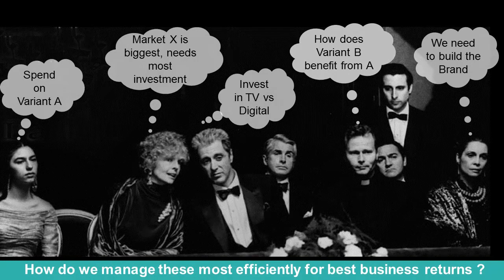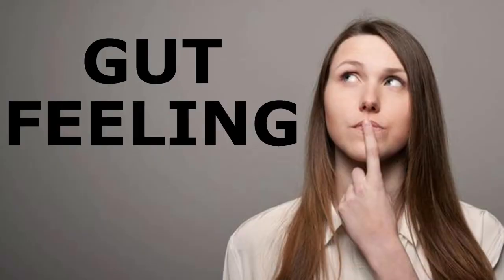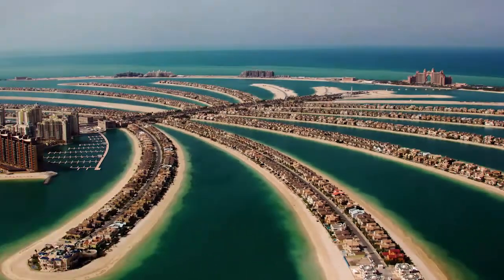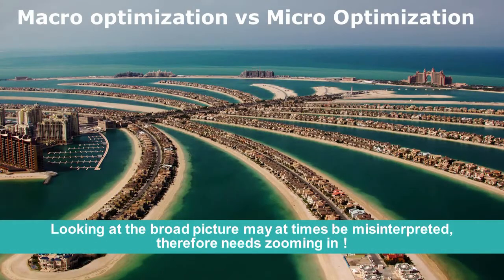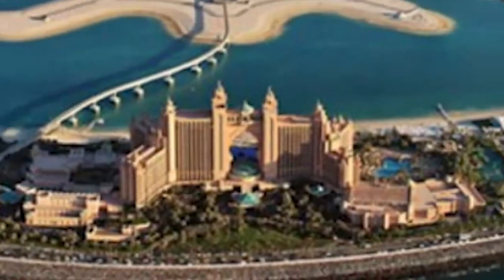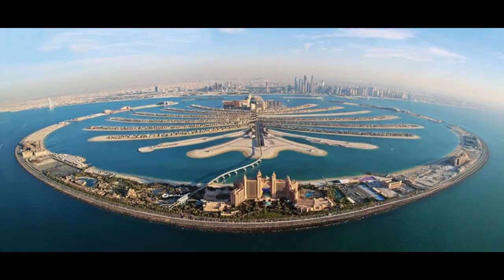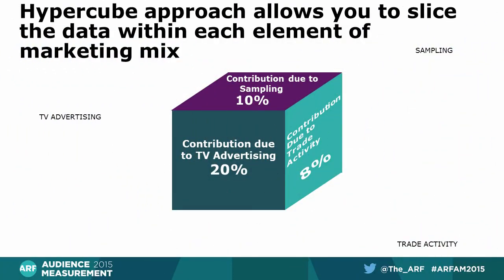Different stakeholders have different needs. So far, the answers to these questions have been mostly based on gut feeling. Looking at the broad picture may at times be misleading and can get misinterpreted. Most analysis tells us the overall role of each of the key factors that impact sales and brand. However, they miss on important details. The new approach allows for micro optimization along with top level macro allocations.